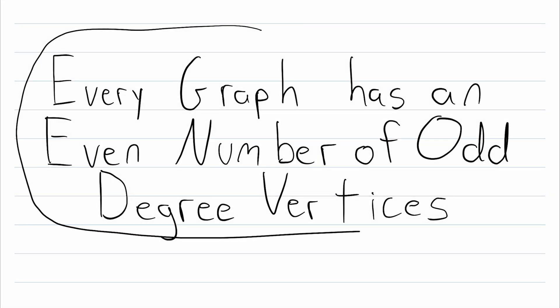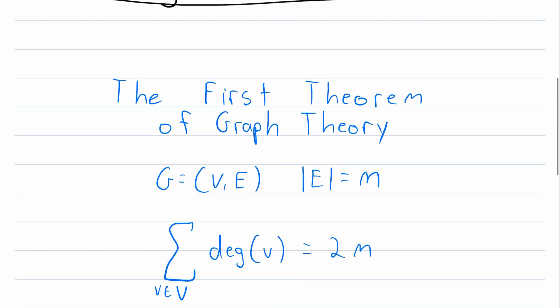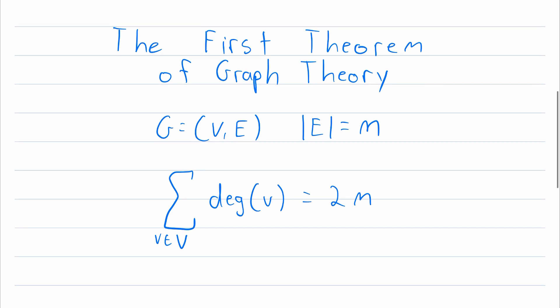How do we prove that every graph has an even number of odd degree vertices? That's what we'll be going over in today's Wrath of Math lesson. I think this is a really neat result with a pretty fun proof, so let's get right into it.